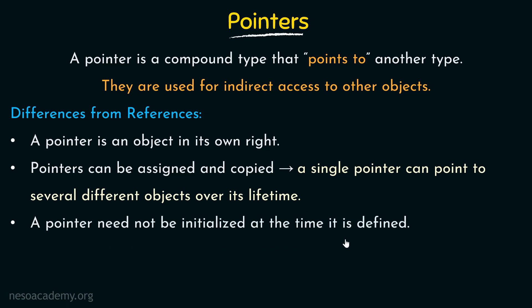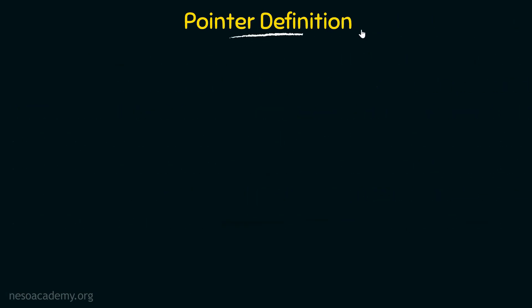A pointer need not be initialized at the time it is defined. In case of references, we always need to initialize a reference when it is defined, otherwise it throws errors. But in case of pointers, we don't have to necessarily initialize the pointer at the time of its definition. Those are the differences between pointers and references. Now let's see how we can define pointers.